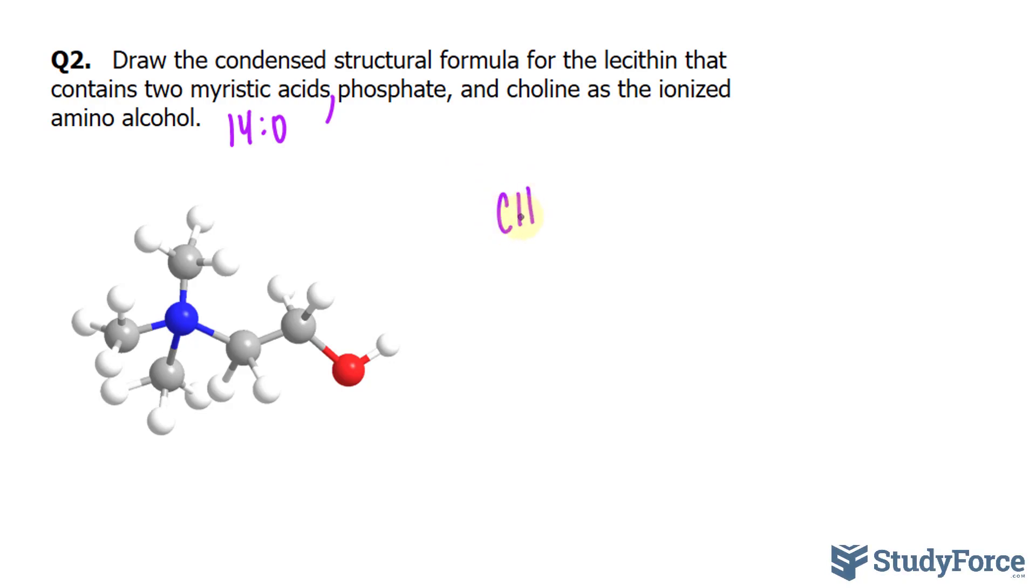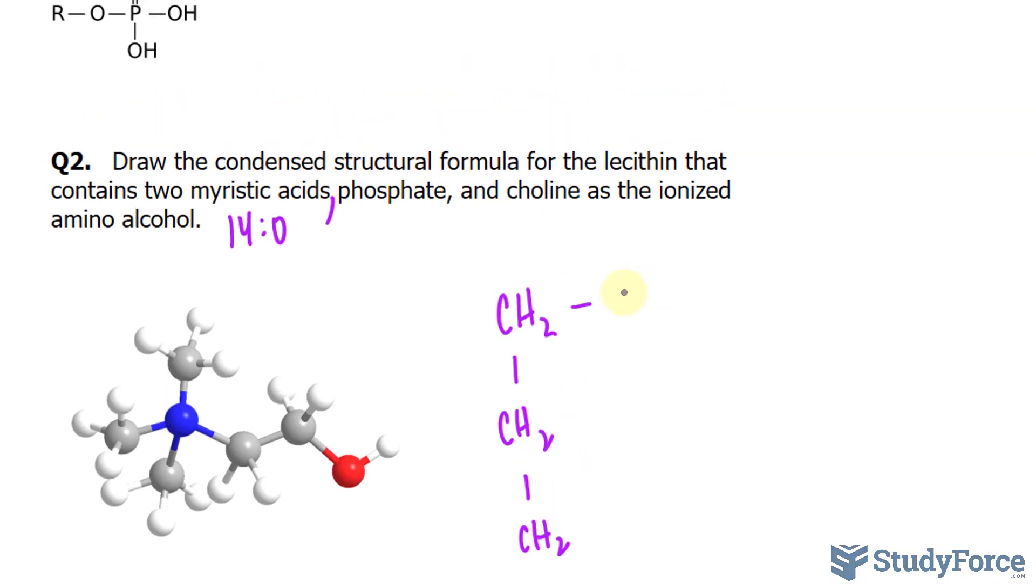We have the backbone for the glycerol part of the molecule, just as before, and myristic acid. They want the condensed structural formula, so we write down carbon, double bonded to oxygen. It's 14 long, so I'll write down CH2 times 6, and that makes 14. Do this again.